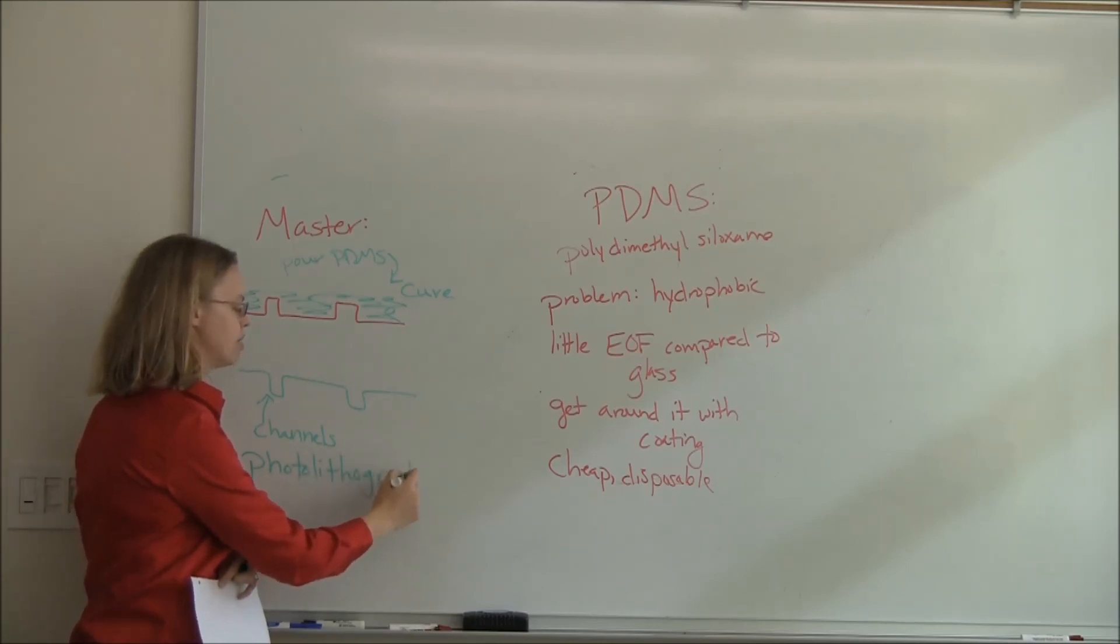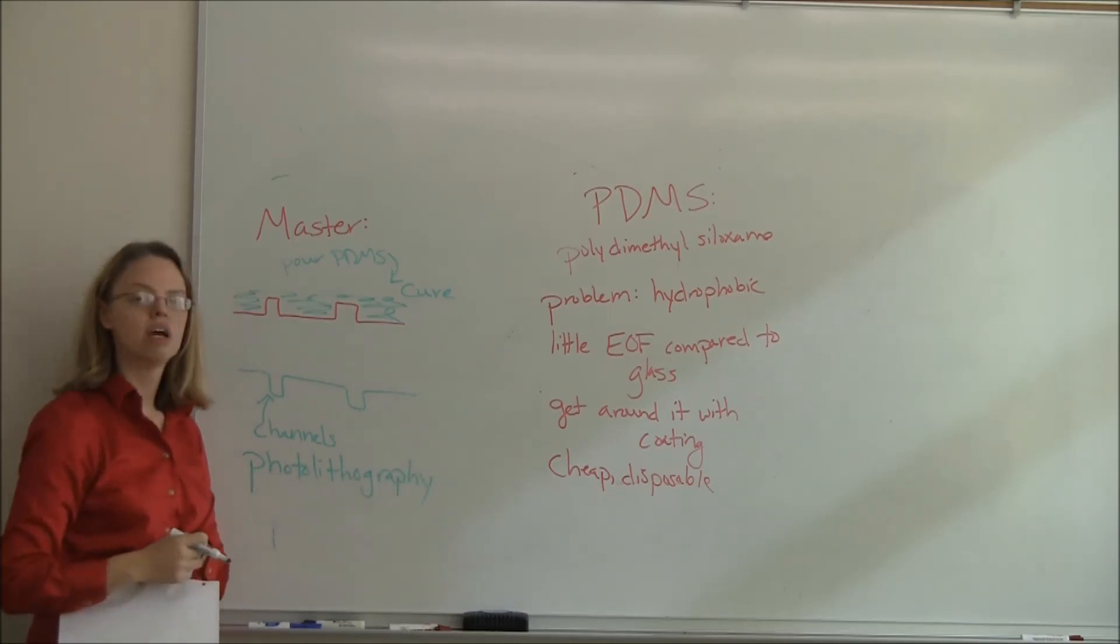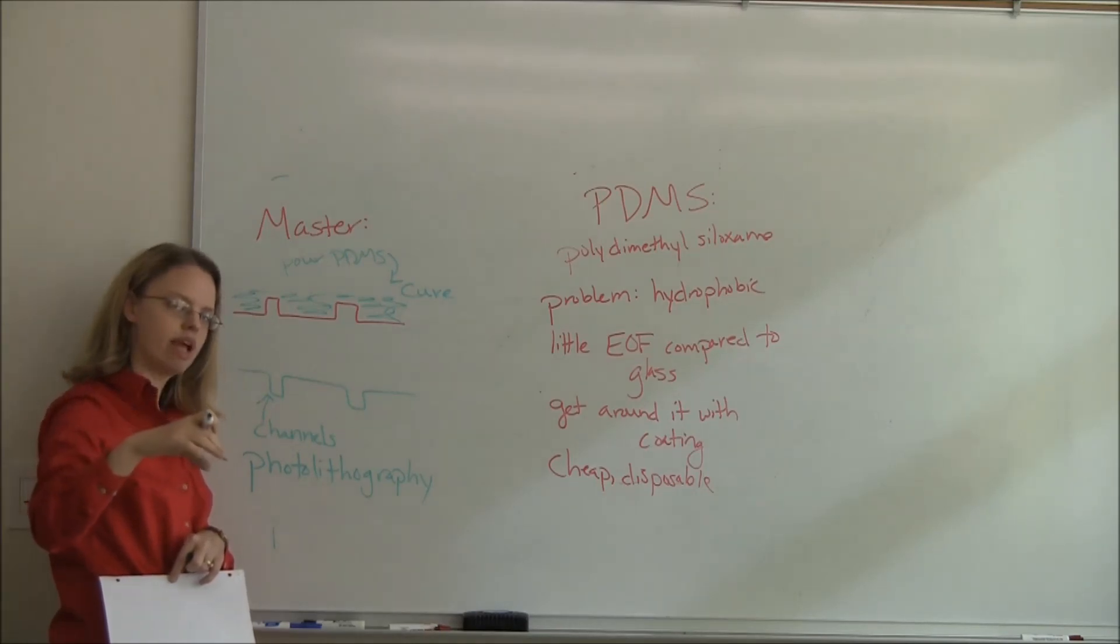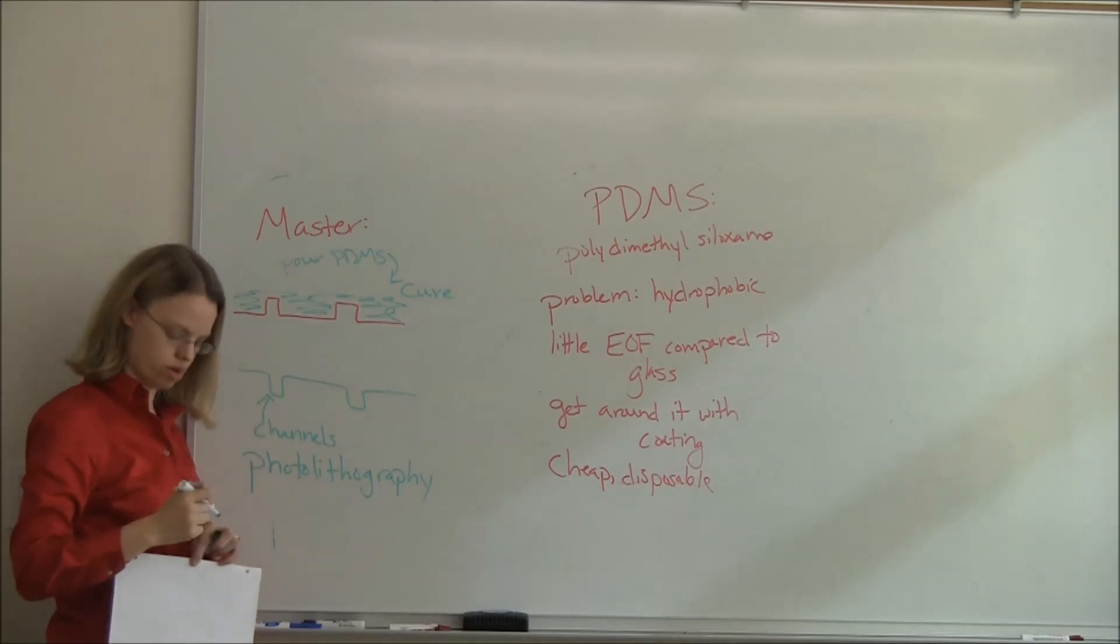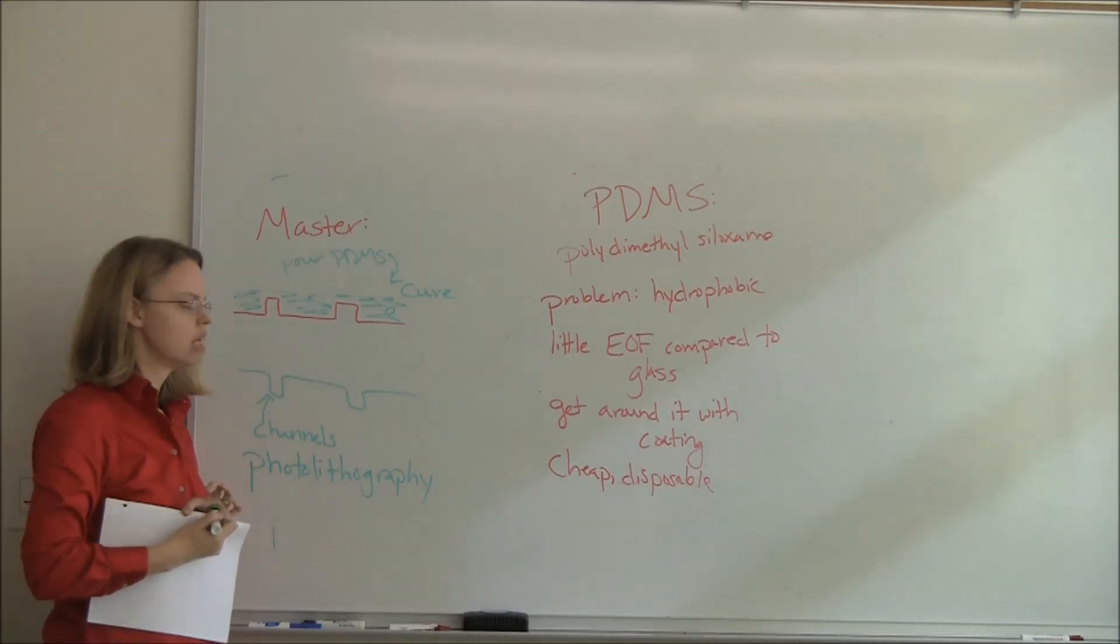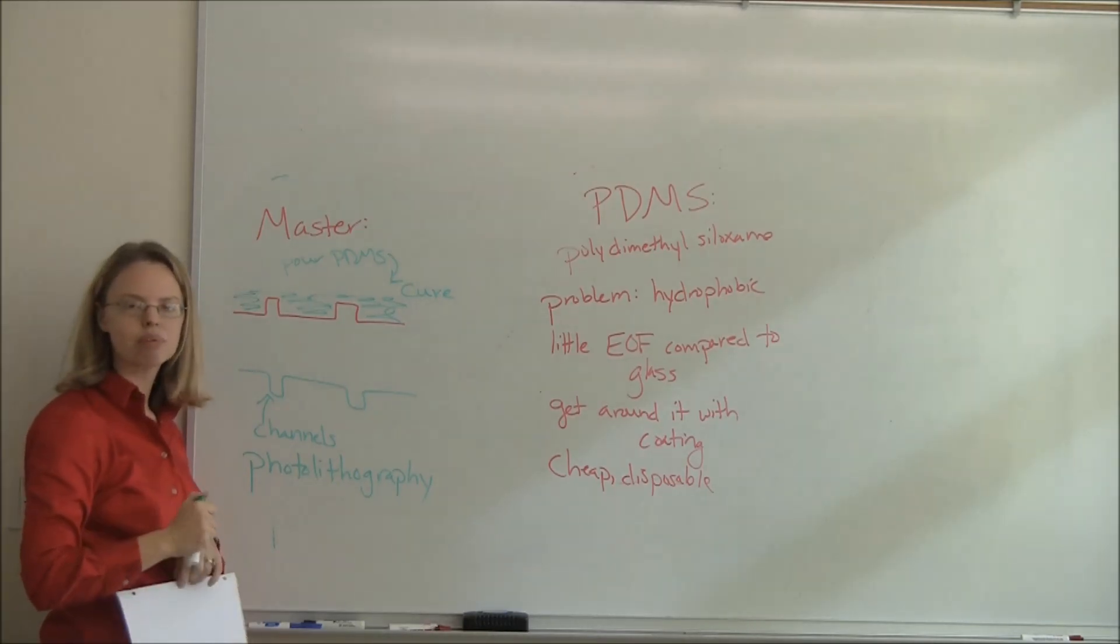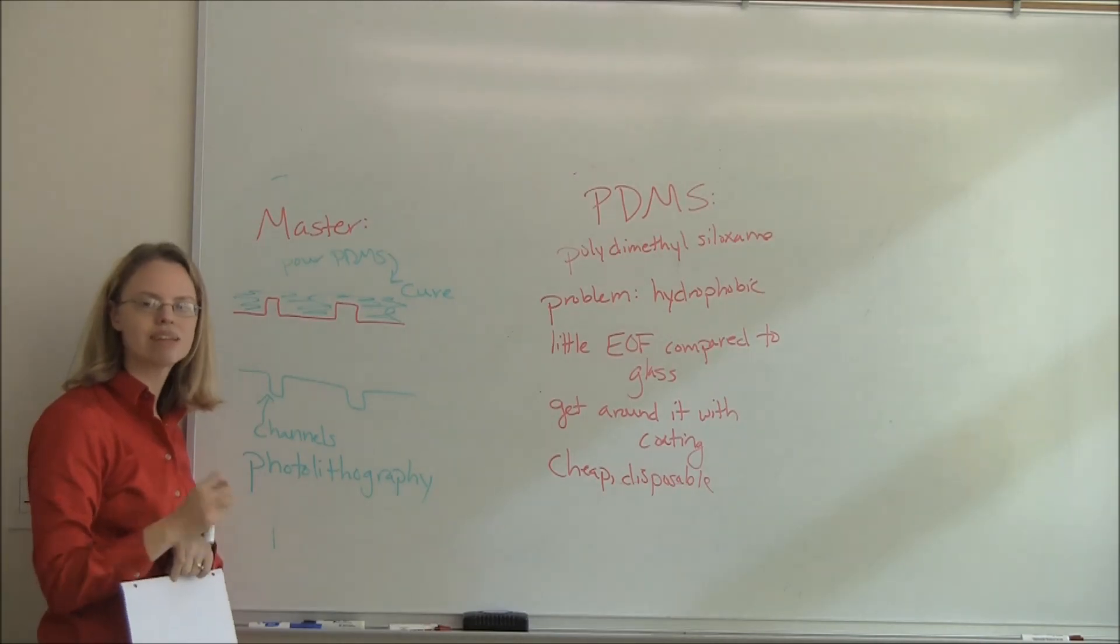most of this now is done with photolithography. And so photolithography is where you cover something with a mask, then you shine light on different areas. Those areas basically develop or are eaten away, take the mask off, and you can pour and make your master. So lots of good photolithography going on, but you'll get the idea of how to make a chip in the lab. That's one of the reasons I like the lab a lot. You actually get to make something.